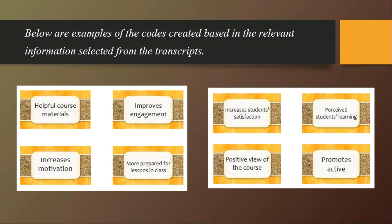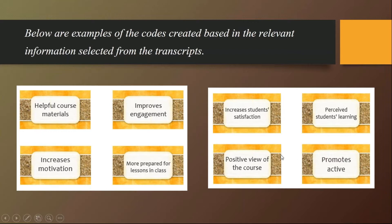After collecting your data, you analyze by identifying significant information from participant responses and then you assign labels to them. So these are some of the labels that we assigned: helpful course materials, increases motivation, improved engagement, students are more prepared for a lesson in class, increase student satisfaction, positive view of the course, perceived student learning — students feel that they learn a lot from this model — and also promote active learning.